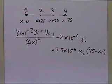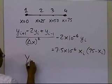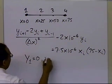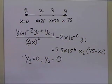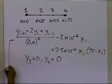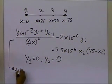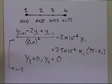Now, this is the equation at any node. I already know the values of y at node 1, which is 0, and at node 4, which is also 0. So all I need to do is write down this equation for i equal to 2 and i equal to 3.